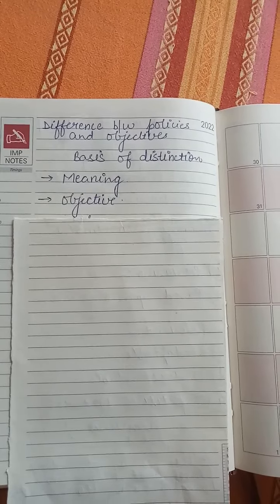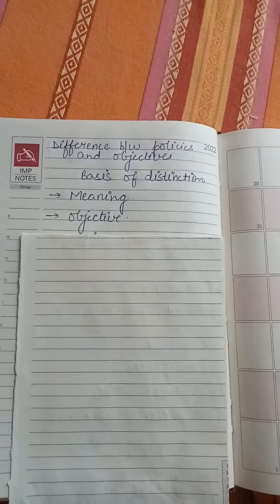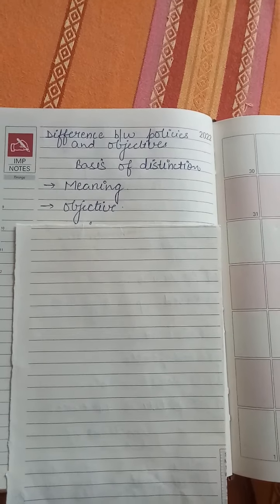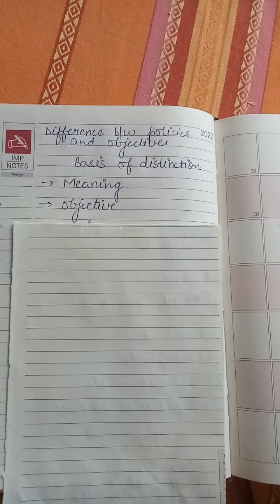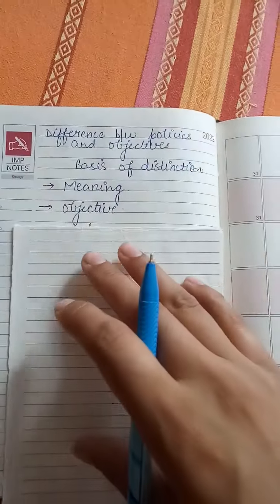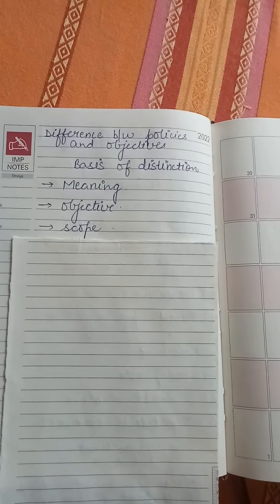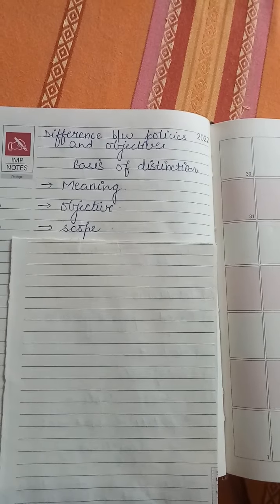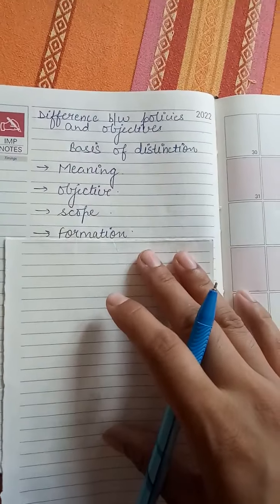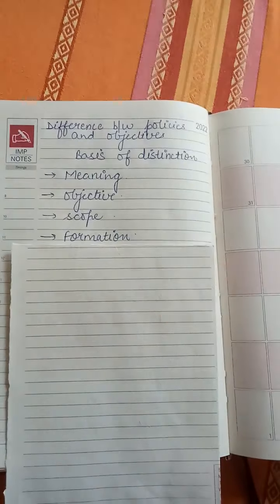The first basis is meaning. Objectives can be defined as the goals and aims of the organization. Now, if I talk about policy, the main point is that the organization has a way to handle a situation in their own way. And if I talk about objective, the organization sets a goal or aim, and the objective is to provide a base for management so that the organization will work with motivation.